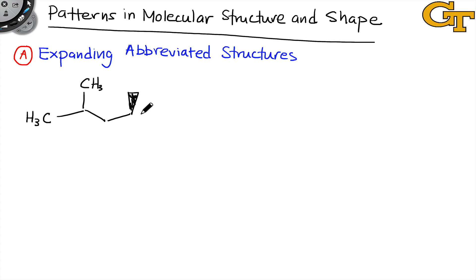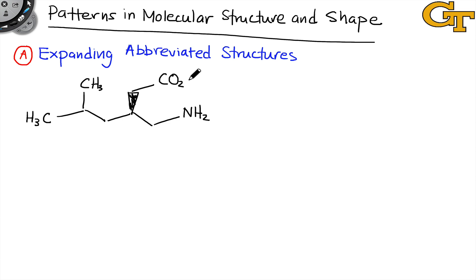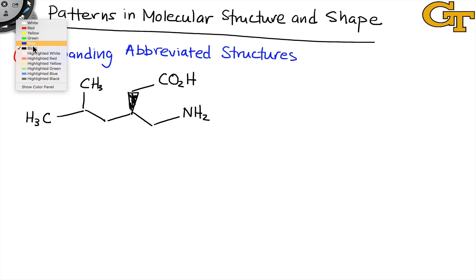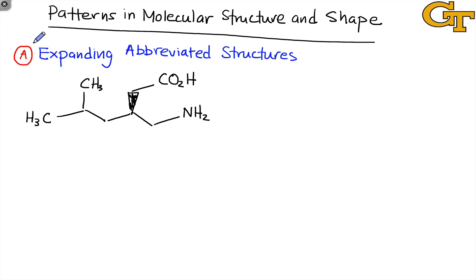The main thing that expert chemists do is interpret given structures and expand abbreviations, and that's really where we focus our attention in this experiment in terms of drawing Lewis structures. Rather than drawing a structure from scratch with absolutely no information, it's much more common for a practicing chemist to have to expand a given substructure.